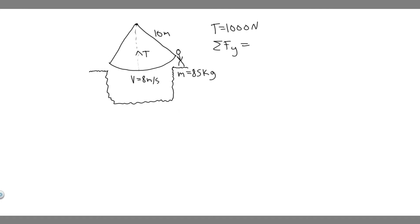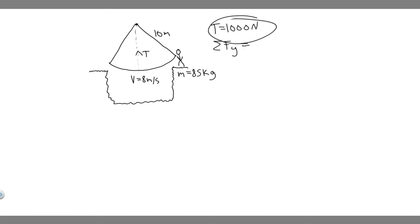So this is what we have going on — the archaeologist is swinging from this vine which is 10 meters long, hooked up to something at the top. They're going to swing across the river. Their speed at the bottom, right in the middle of the swing, is 8 meters per second. The vine has a maximum tension of 1000 newtons. His mass is 85 kilograms.